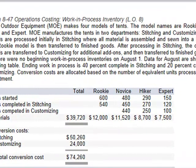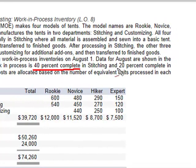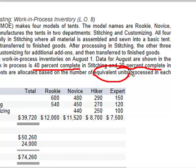We also need to note that Ending WIP is 40% complete in Stitching, meaning 40% of the work has been done and 60% is left. In Customizing, they're 20% complete — 20% has been done and 80% is left to be done. Conversion costs are allocated based on equivalent units of production.